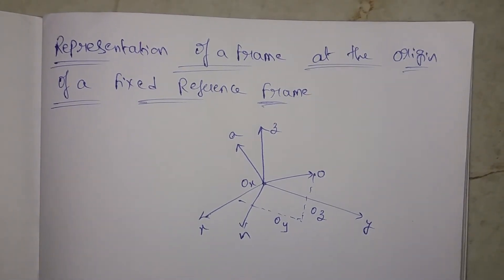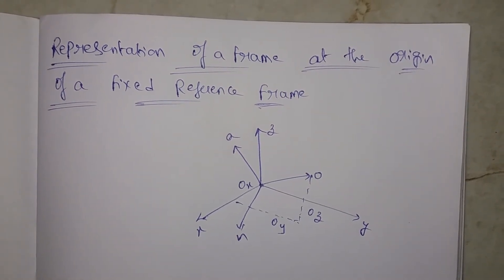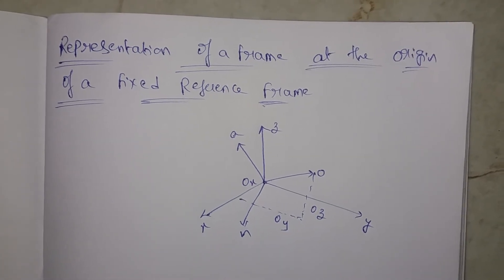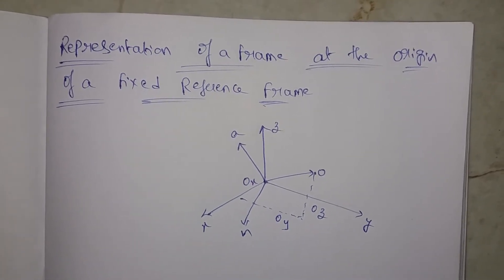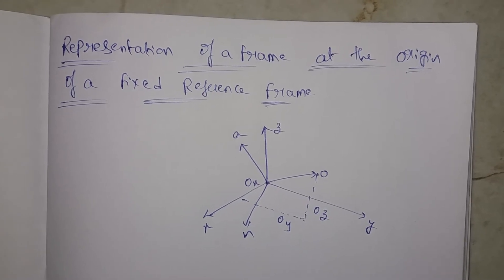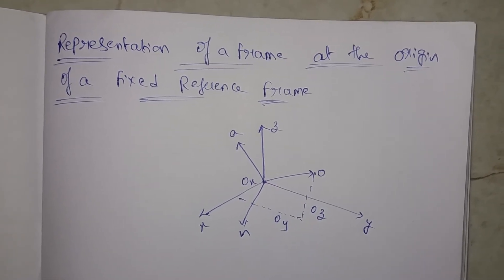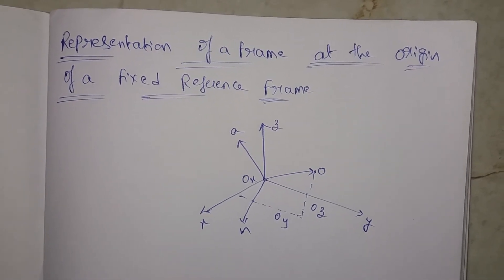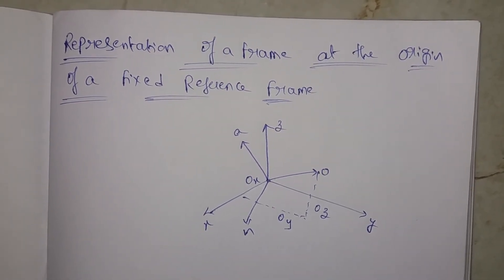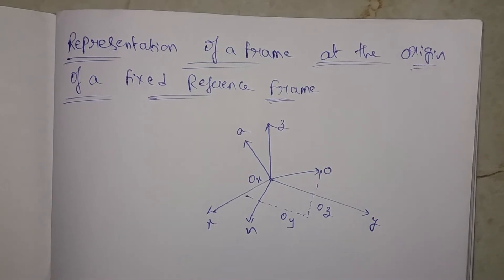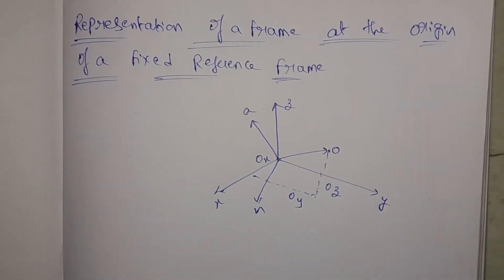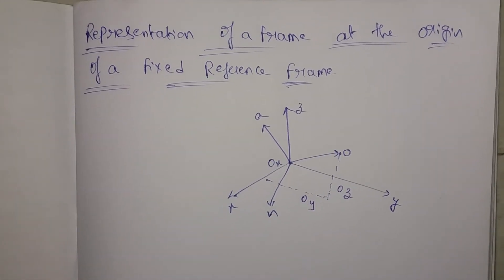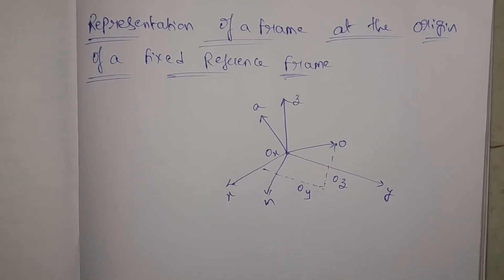First, the fixed reference frame is a fixed reference frame. We represent the origin of a frame. Next, we represent the universal reference frame as a fixed reference frame. We can also use the moving reference frame as a fixed reference frame.